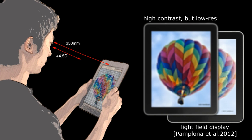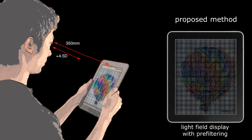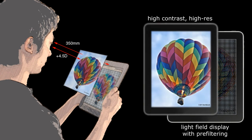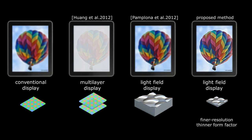Due to spatial angular trade-off of the hardware, we have developed a pre-filtered light field display, which enables the received image to have both high resolution and high contrast. We use a finer lens LED array and have a thinner form factor than the prior light field solution.